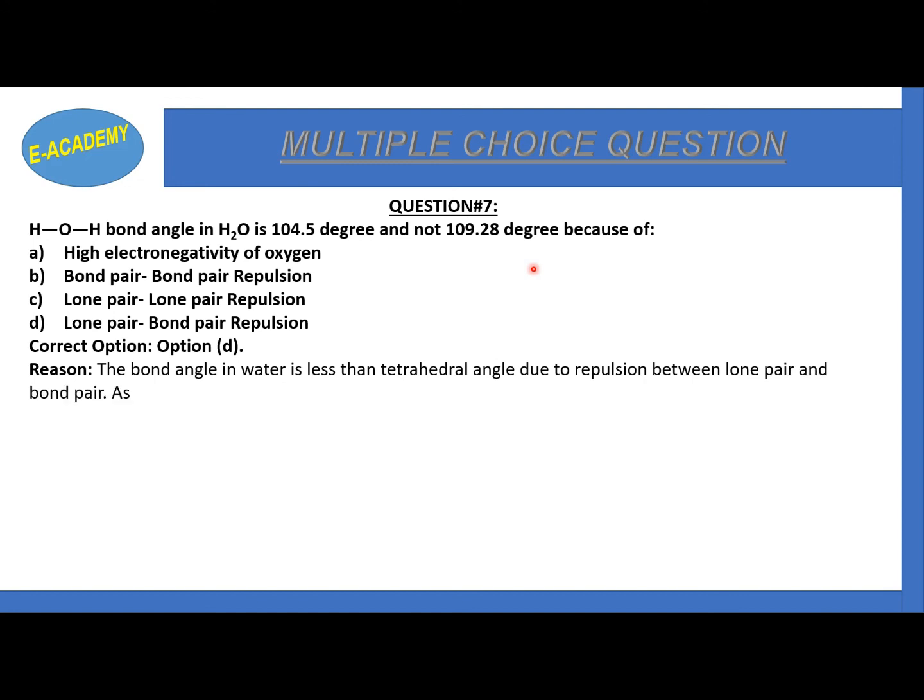This is why the bond angle in water is less than tetrahedral angle. Due to repulsion between lone pair and bond pair, the bond pairs move away from the lone pairs and come closer to each other, and hence the angle between bond pair decreases up to 104.5 degrees.